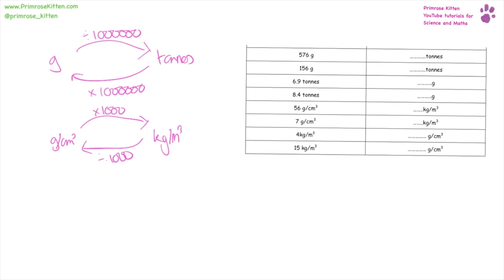Giving us answers of 0.000576, 0.000156, 690,000, 4,100,000, and then 56,000, 7,000,000, 0.004, 0.015.